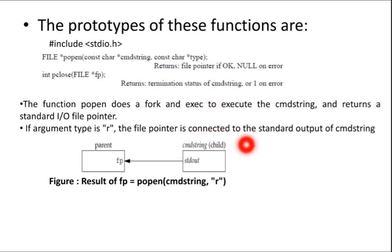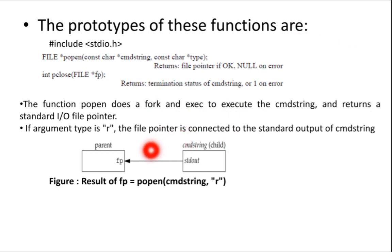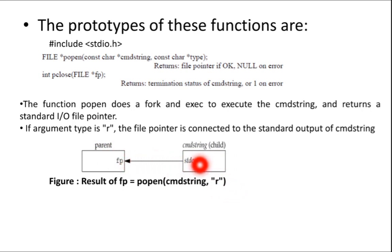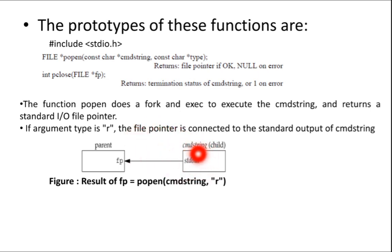The child is the command string. The parent creates that command string using fork, then uses exec to execute the command string, and returns a standard I/O file pointer. If the type argument is 'r', the file pointer is connected to the standard output of the command string — 'r' is for reading, so the parent reads from the standard output of the child.